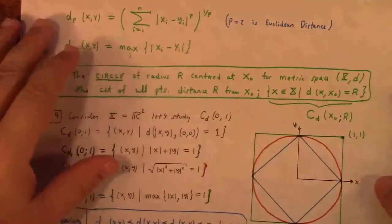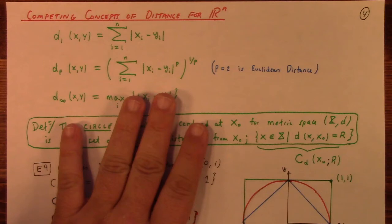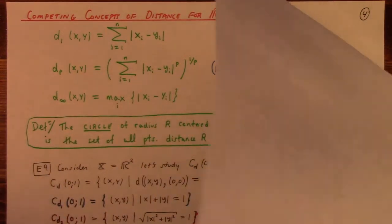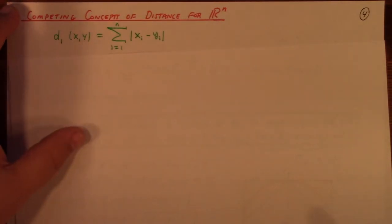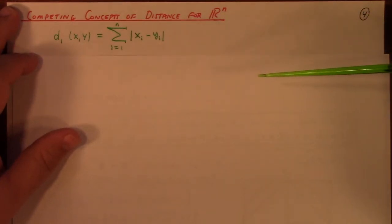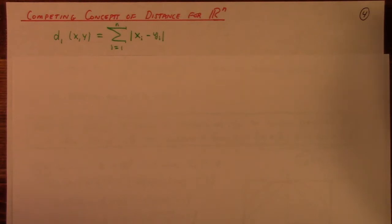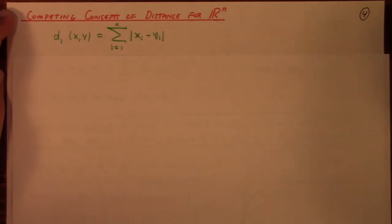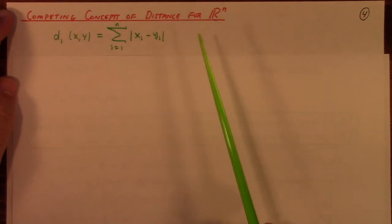Many spaces that you're interested in do have an inner product, and the analysis on those spaces is in fact married to the use of the inner product. It's true for R^n, and also in Fourier analysis, where you have an inner product built from integration. There are inner products more abstract than the ones you've seen in regular courses, unless you've had a course in Fourier analysis.